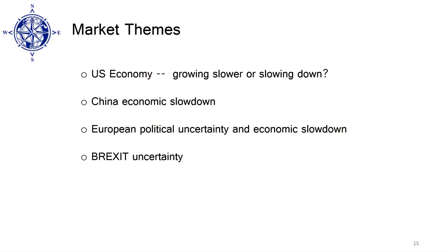Okay, here they are. The first is the U.S. economy — is it growing slower or slowing down? Where exactly is the U.S. economy in the growth cycle? The second is the China economic slowdown. The third theme is European political uncertainty and its economic slowdown. The fourth is, of course, Brexit uncertainty.